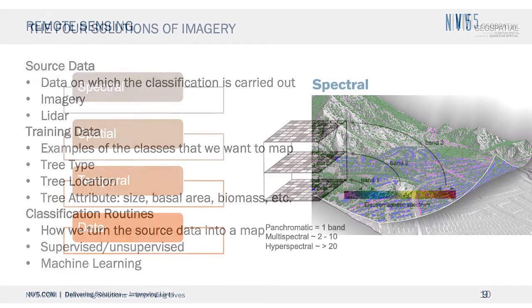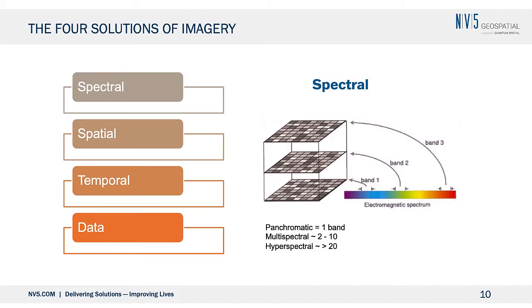In terms of bringing imagery to the table, there are really four resolutions to think about. Spectral resolution relates to the electromagnetic spectrum — each wavelength captures the brightness or reflectance from the top of the vegetation. Spatial resolution is how big the individual pixel is. Temporal resolution is how often you can capture the data. And data resolution relates to whether you're dealing with an 8-bit or 16-bit image.